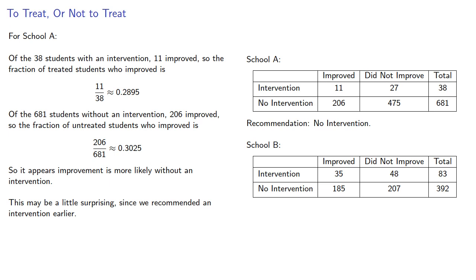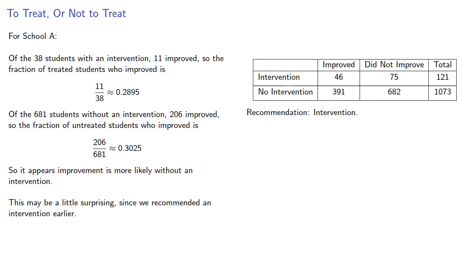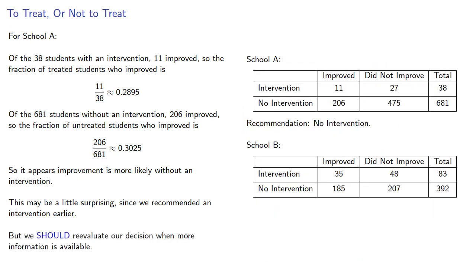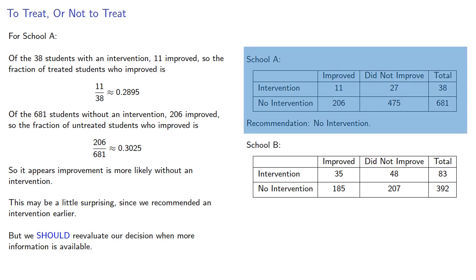This may be a little surprising since we recommended an intervention earlier. But ignoring facts and evidence is only something you can do if you're a politician. We should reevaluate our decision when more information is available. In this case, the additional information is which school we're looking at.